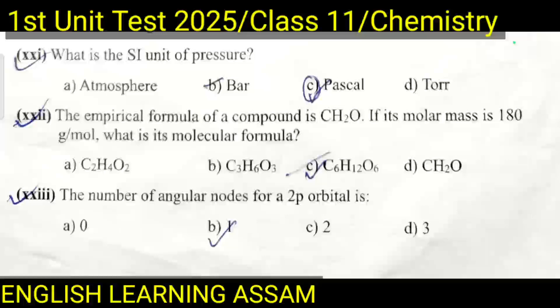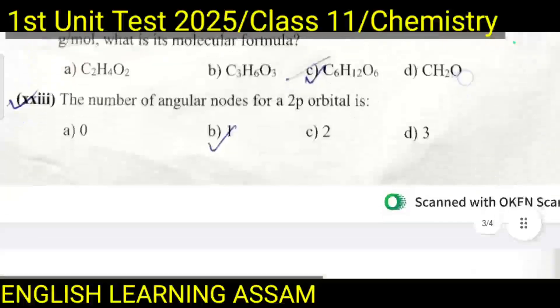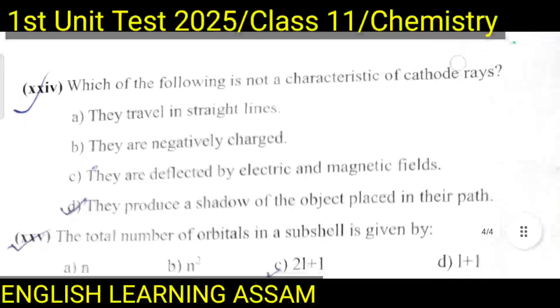Question number twenty-three: The number of angular nodes for a 2p orbital — A. 0, B. 1, C. 2, D. 3. The correct option is B — 1.